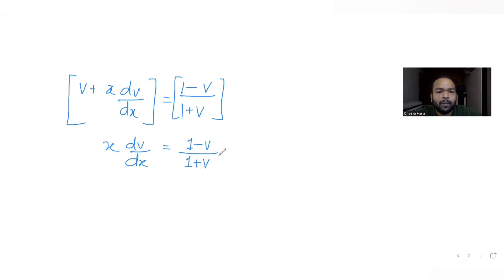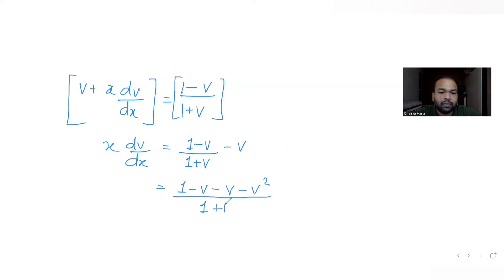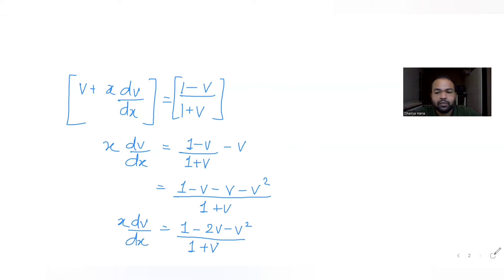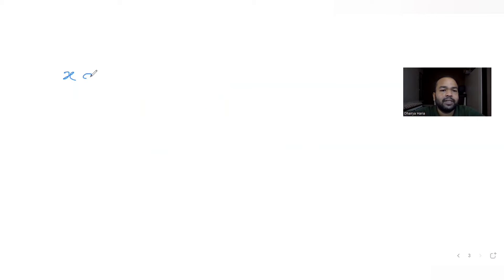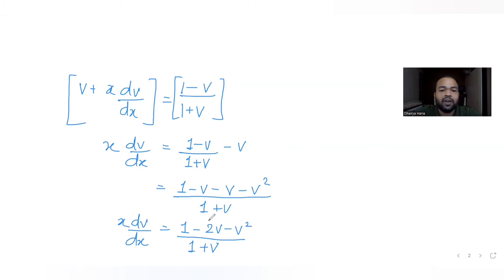So x·dv/dx equals (1 minus v)/(1 plus v) minus v. Solving this further: the numerator becomes 1 minus v minus v minus v² — that is 1 minus 2v minus v², all over (1 plus v). So x·dv/dx equals (1 minus 2v minus v²)/(1 plus v).